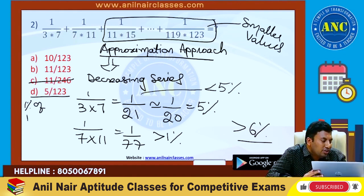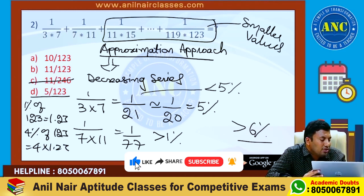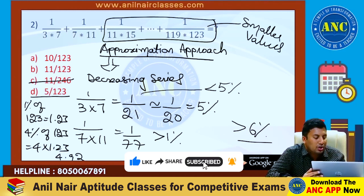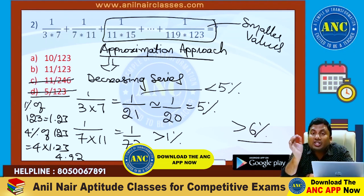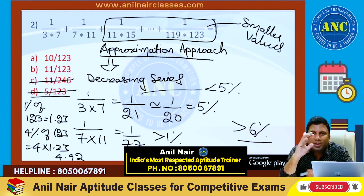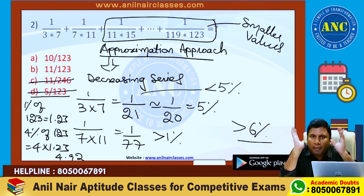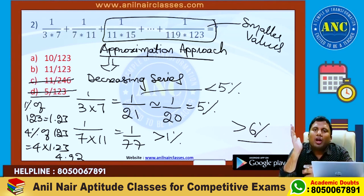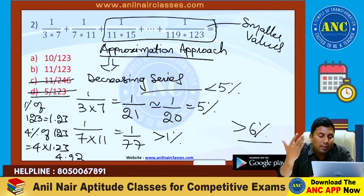5/123: 1% of 123 is 1.23, so 4% of 123 is nothing but 4 × 1.23, which is 4.92. But the answer is greater than 5%, so that option is also eliminated. If the answer option's last numerical value is eliminating only one option, go by the approximation method. The idea is to give you various tools — depending upon the merit of the problem, use any method. Method 2 is the best method to solve all the problems, but there are certain times where method 2 is not needed. In that case, method 3 and the approximation approach will be the best approach.